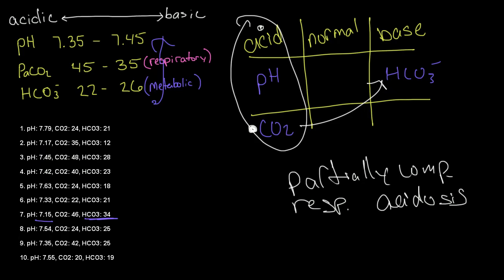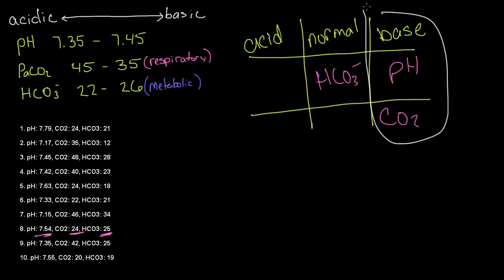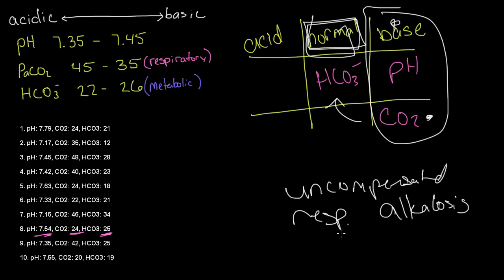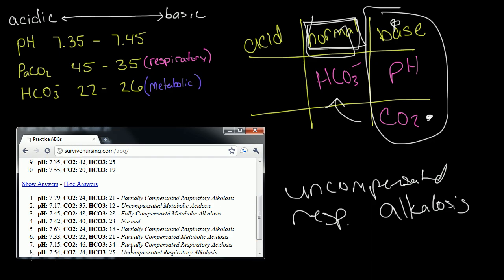Let's double-check our answer — this is problem number seven: partially compensated respiratory acidosis. We are correct. Moving on to problem number eight: pH is 7.54, which is more basic, so pH goes in the base column. Our CO2 is 24, which is also a base. And our bicarbonate is 25, which is normal, so HCO3 goes in the normal column. Our tic-tac-toe is in the basic column, so we are in alkalosis. The parameter used to make up the tic-tac-toe is CO2 — a respiratory value. And our opposite parameter is doing nothing — it's in the normal column, so it is uncompensated. Uncompensated respiratory alkalosis — this matches.